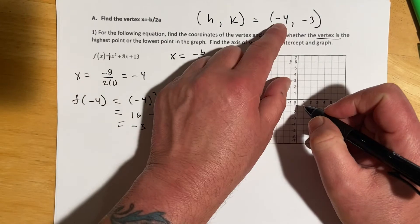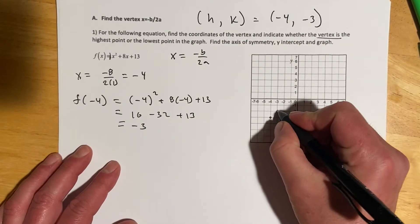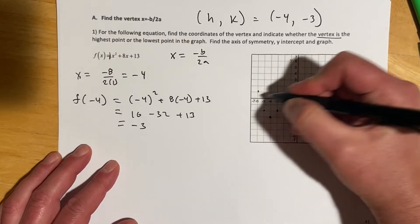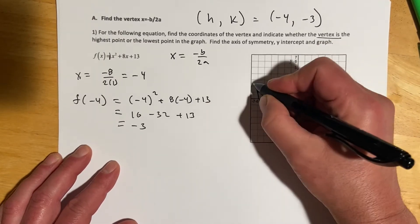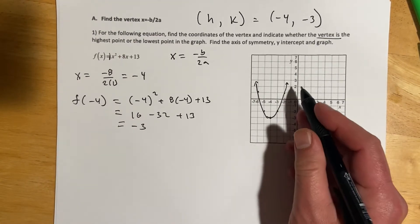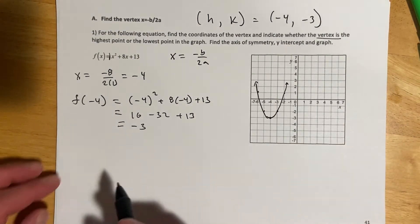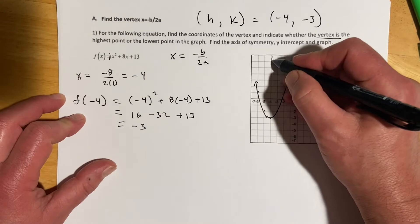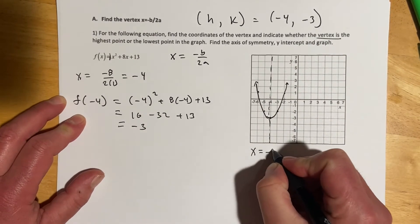So we are here at x is negative 4, y is negative 3. And then I can just graph up from there. So there's our graph. I kind of look at the x-intercepts, and there's something not nice. So that tells me I'm probably going to end up having to use quadratic formula on this. And then what else am I supposed to find? Find the axis of symmetry. So that would be this right here. So that is x equals negative 4.